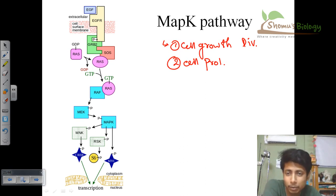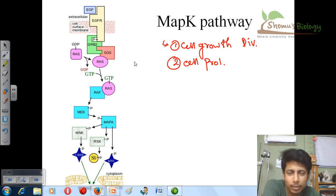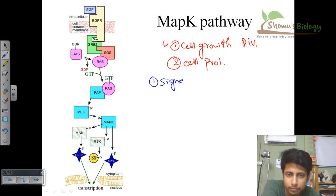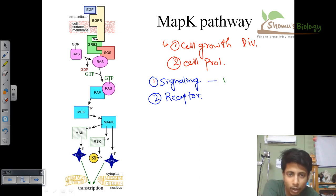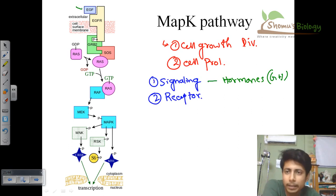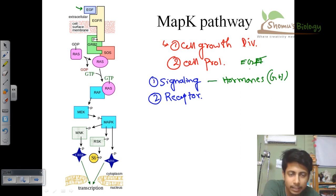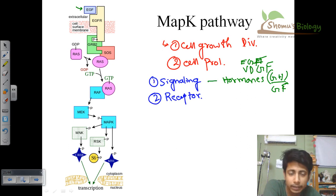The MAP kinase pathway is associated with cell proliferation and growth. Like any pathway, it requires a signaling molecule and a receptor. In most cases, the signaling molecules are growth hormones or growth factors — for example, EGF (epidermal growth factor) and VEGF (vascular endothelial growth factor), also known as PDGF (platelet-derived growth factor). These are the different types of growth factors that can trigger the MAP kinase pathway.